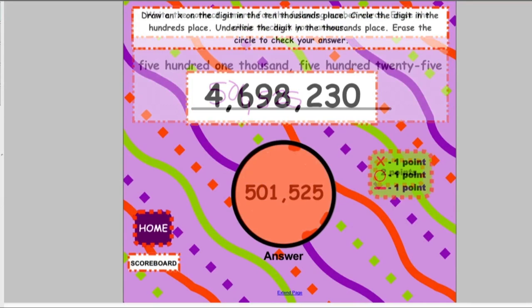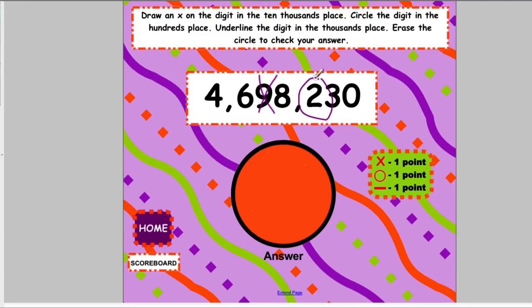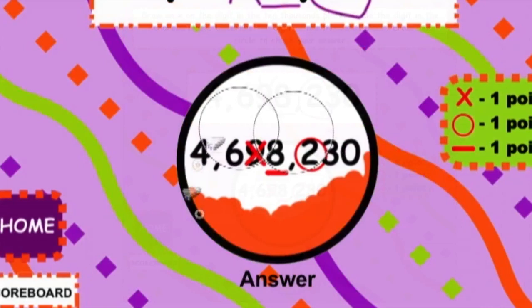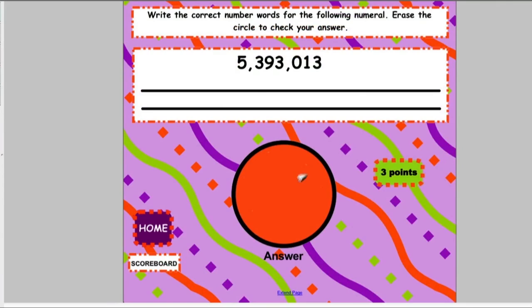In one activity, they read the instructions carefully. They place an X on one digit, a circle on another, and they underline the place of another digit. To check their answer, they erase the big orange circle. They also write the number words for a numeral presented, and they erase the big orange circle to check their answer.